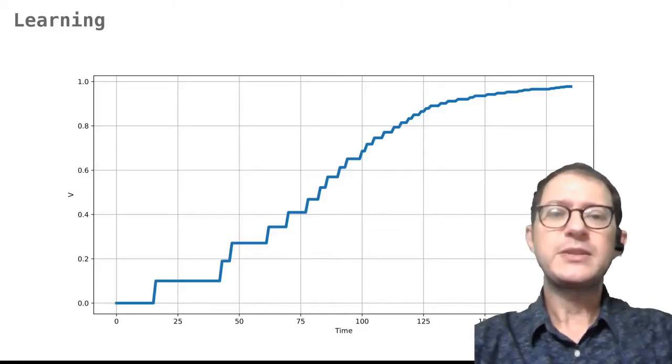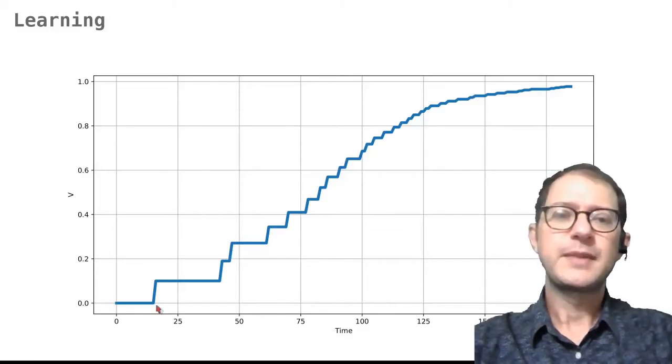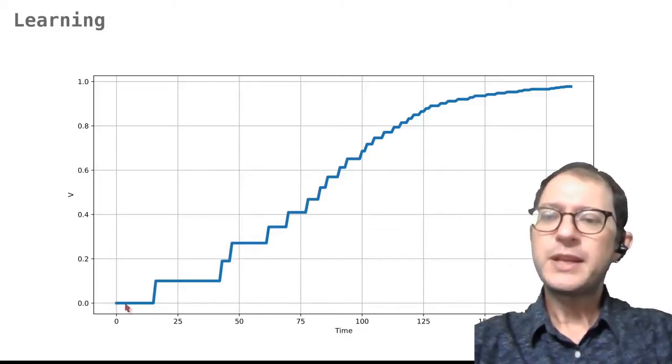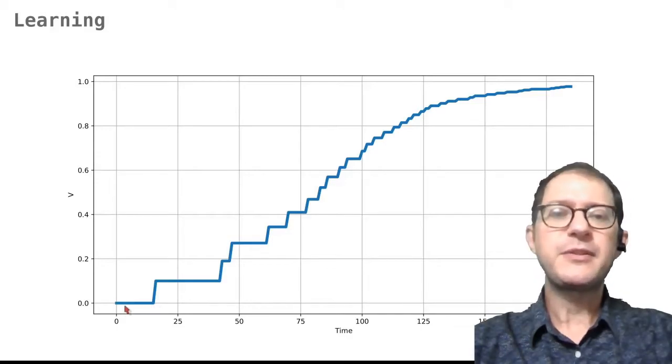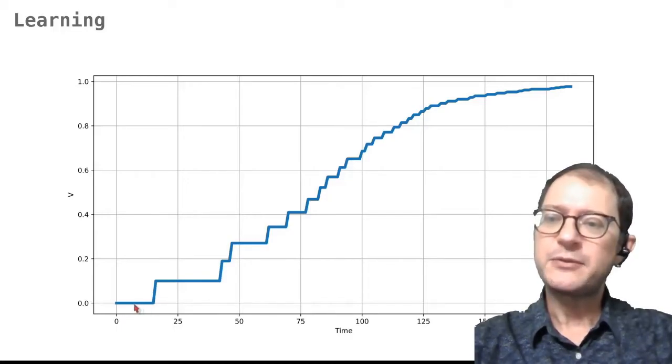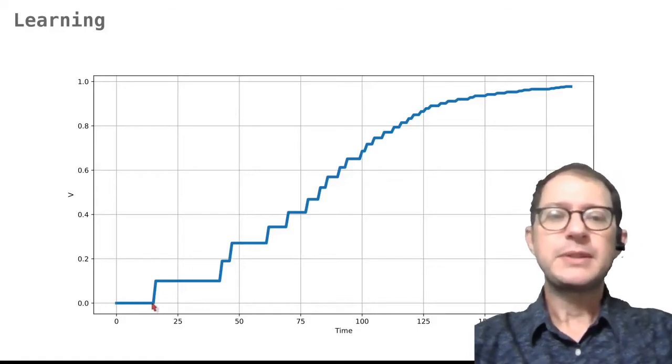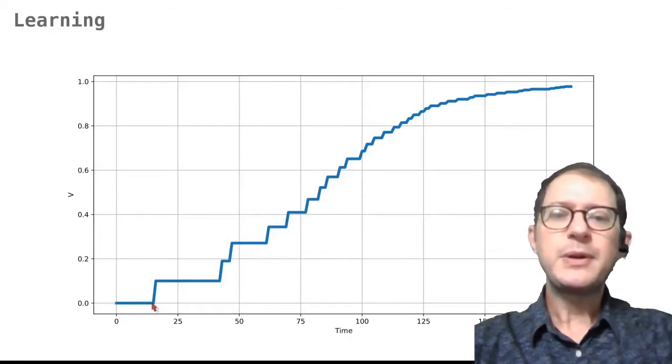The reason is that Rescorla-Wagner assumes that V changes whenever the CS and US are experienced, while the instrumental associative strengths change only when the action is performed. For example, if we look over here at the beginning, the response is very rare because its associative strength is small. As long as the response is not performed, nothing happens, as you see here for the first about 20 time units. But at some point, around time 20, our simulated rat decides to press the lever, and it is rewarded for doing so.